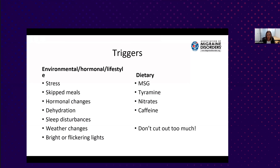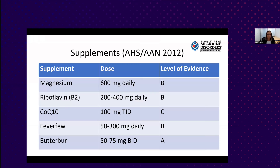Here are the supplements from the American Headache Society and American Academy of Neurology 2012 guidelines. In my practice, we use the top three the most because of their level of evidence, efficacy, and fewer side effects. Magnesium can cause some stomach upset or diarrhea, so we sometimes start on a lower dose or try different formulations, but typically these are tolerated really well and seem very effective. If a patient isn't ready to start preventative medication or symptoms aren't frequent enough to warrant it, I'll start with these supplements along with trigger avoidance.